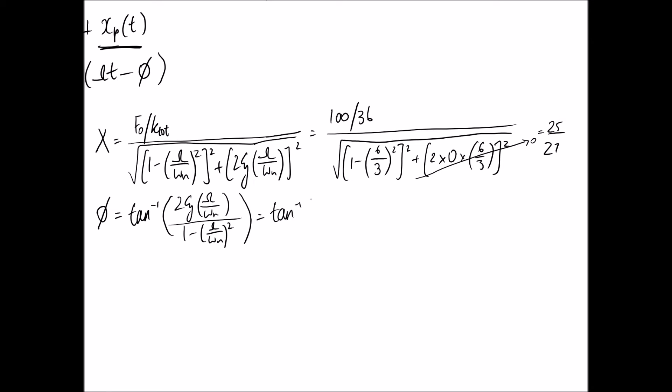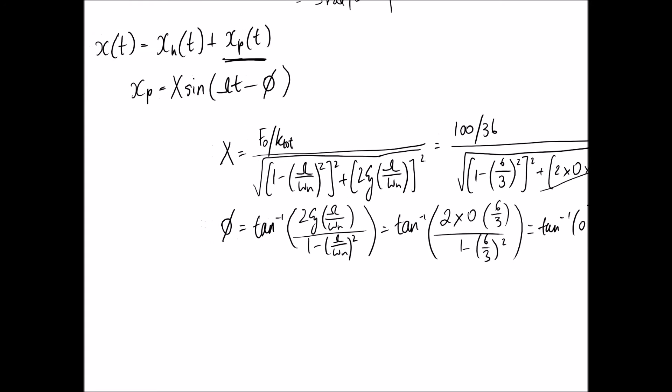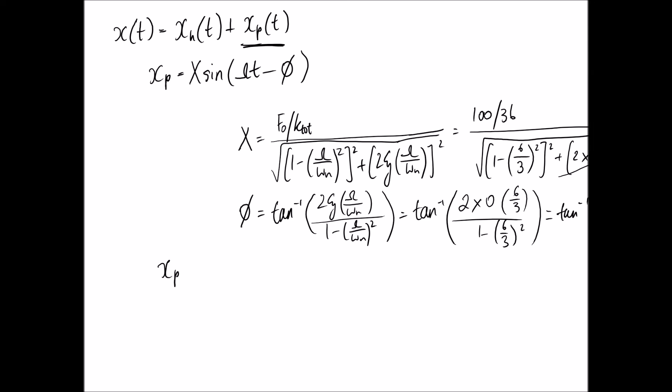Now we just need to work out what phi is. We've worked out all these constants before, so it's just a matter of substituting in. In fact, you're going to get 2 times 0 here on the top line anyway. So it becomes tan inverse of 0, which is 0. So we've worked out our 2 constants, and we can go back and put them into our x of p equation. I'm just going to leave this in fractional form. Phi turned out to be 0, so I'm just going to drop it from the equation.